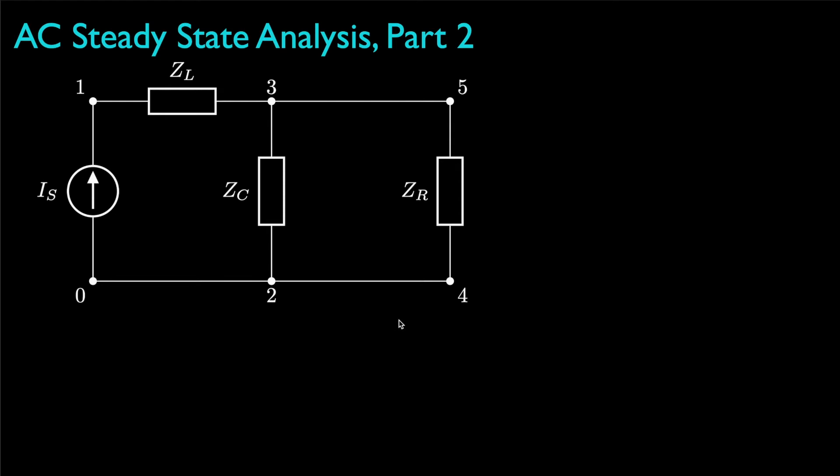If we use the frequency to convert each of the passive elements to their impedance, then the circuit might look like this where I sub s is the phasor value for the current source.